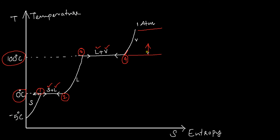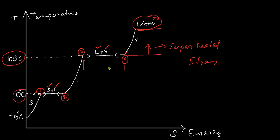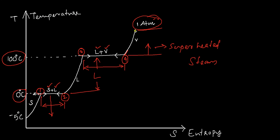Anywhere above 100°C at 1 atmosphere, the steam is called superheated. You have a liquid-vapor mixture at 100°C and 1 atmosphere, a liquid-only region, and a solid-liquid mixture from 1 to 2, and a solid region below 0°C. So any temperature below 0°C at 1 atmosphere is solid; solid to liquid at 0°C during the phase change; completely liquid from 0 to 100°C; liquid-vapor region at 100°C during the phase change; and above 100°C you have superheated steam.